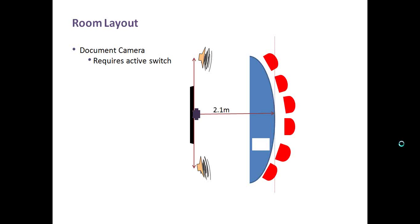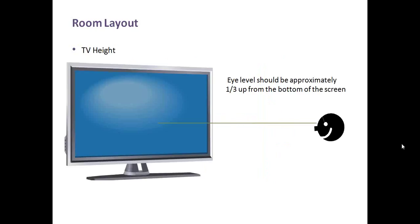Remotes — you want them where the meeting controller is, whether that's the meeting leader or an operator. Data share — same thing. You want all this gear at a spot where the meeting leader or operator has easy access and control to share it amongst all participants.